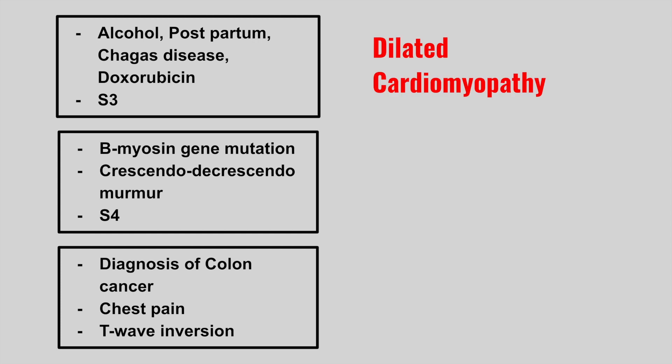The next one is someone who drinks alcohol, is postpartum, has Chagas disease, or has been exposed to doxorubicin, and now presents with an S3. This is dilated cardiomyopathy.